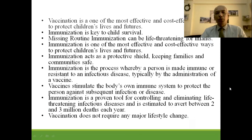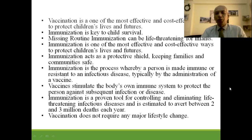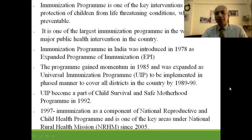Vaccination is one of the most effective and cost-effective ways of protecting children's lives and futures. Immunization is a key to child survival — missing routine immunization can be life-threatening. It acts as a protective shield keeping families and communities safe. Immunization is the process whereby a person is made immune or resistant to infectious disease, typically by administration of a vaccine, which stimulates the body's own immune system to protect against subsequent infection. Immunization is a proven tool for controlling and eliminating life-threatening infectious diseases and is one of the key public health interventions.